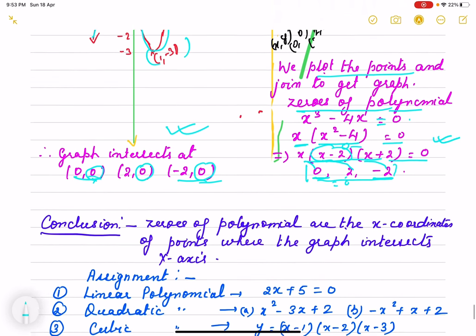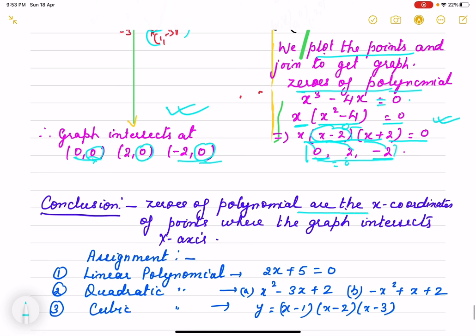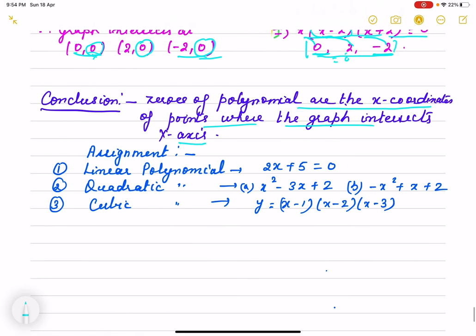So what is the conclusion? Zeros of polynomial are the x-coordinate of points where the graph intersects x-axis. So what is your work? This way you will draw the linear polynomial. In this case you will take 2x plus 5 equals 0.